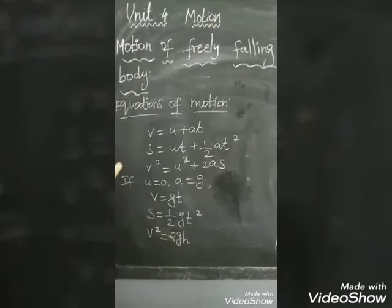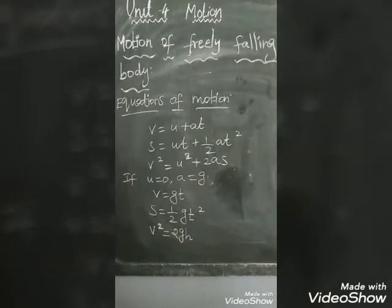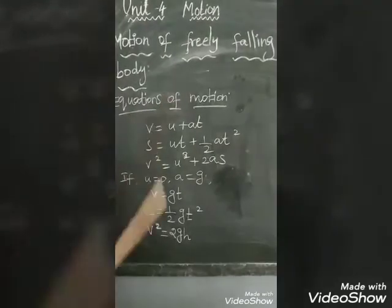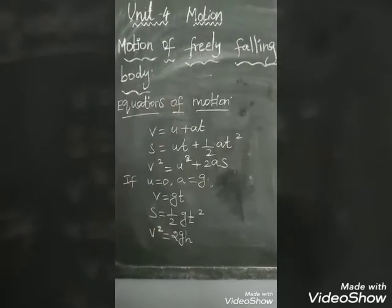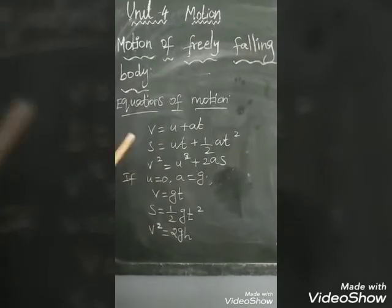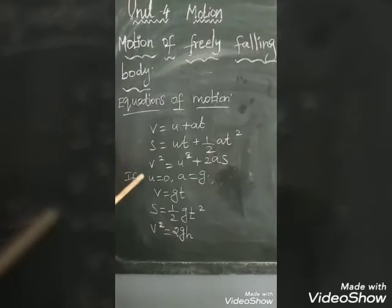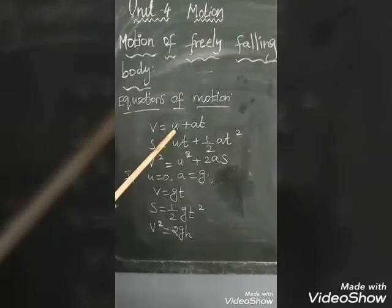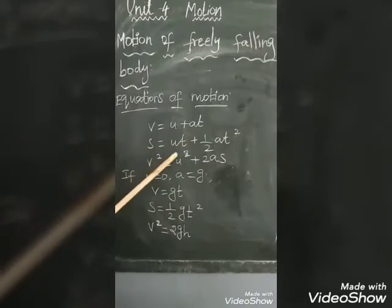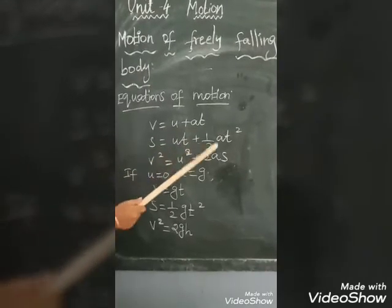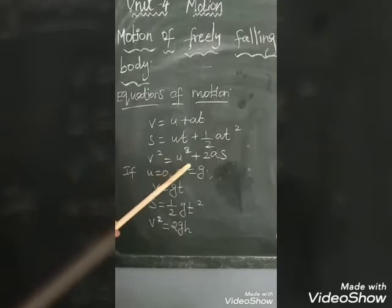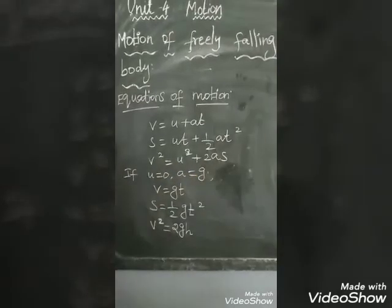What we have discussed already? That is equations of motion. In equations of motion, we have discussed three main equations: V = U + AT, S = UT + ½AT², and V² = U² + 2AS.